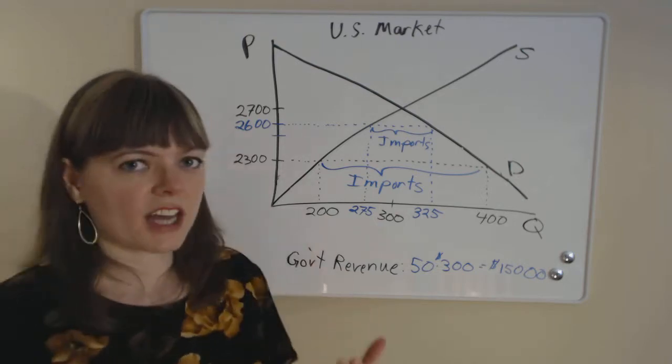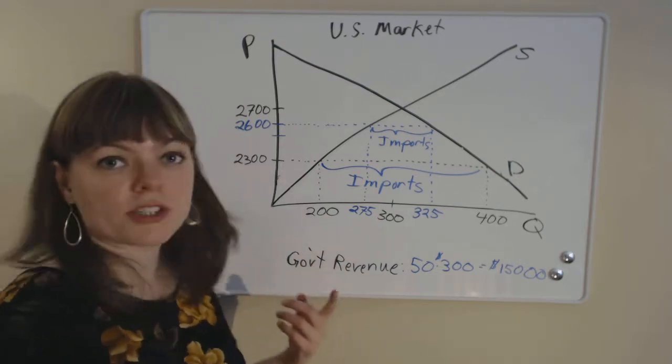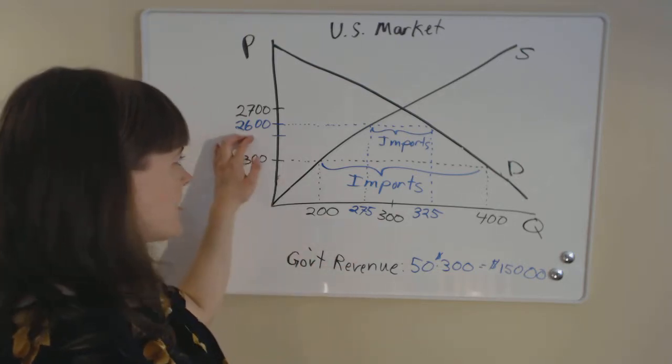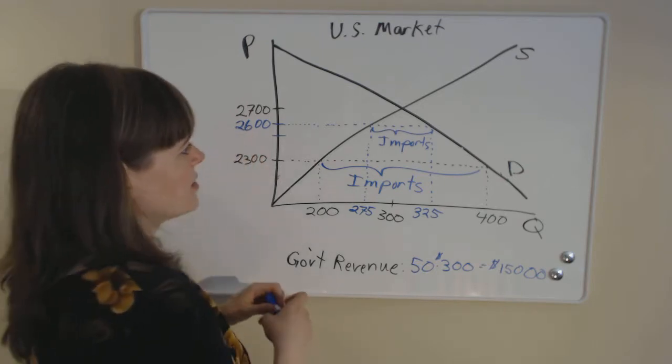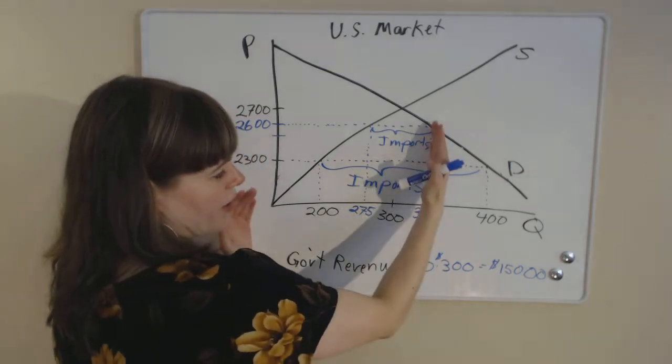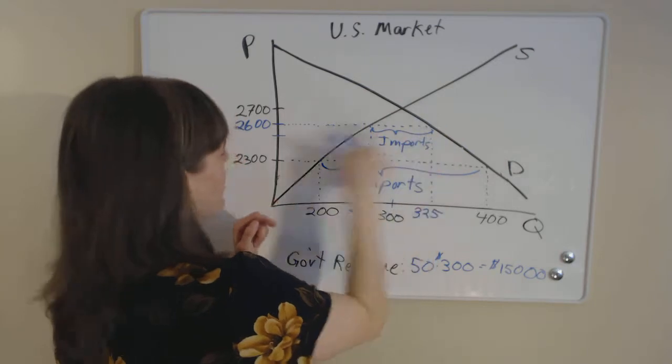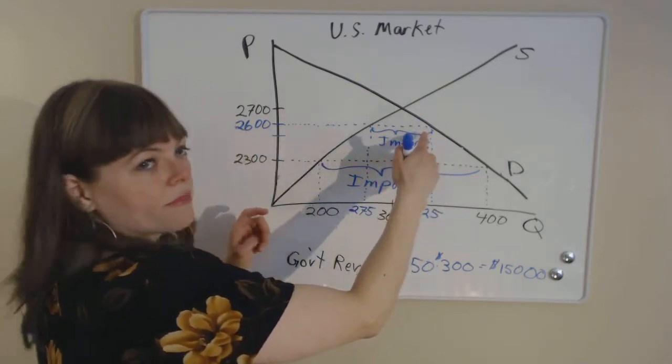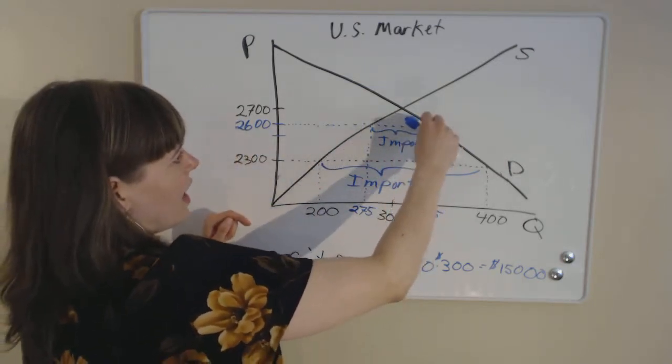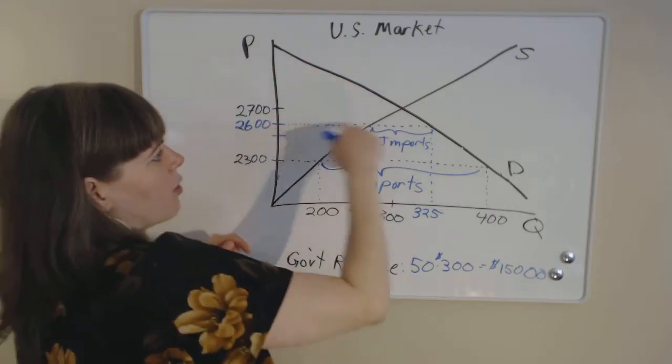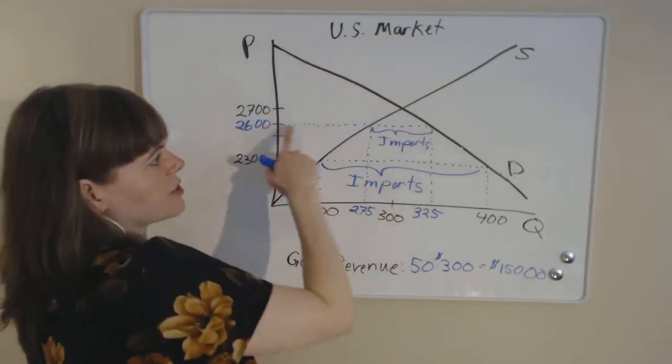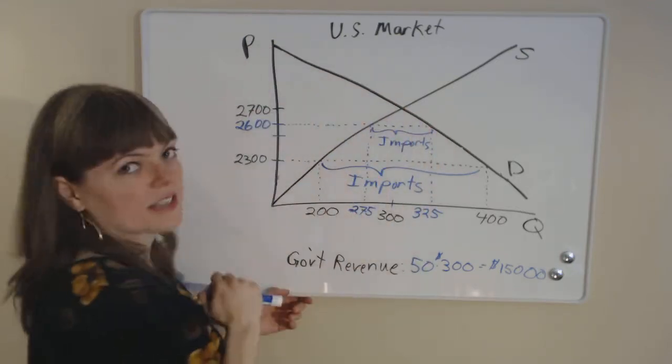So we have this big triangle here of consumer surplus in a free trade situation. And we can use the same logic to find our consumer surplus in the tariff situation. So in the tariff situation, we have 325 consumers who are willing to buy at this higher price. And we can add each of those consumers' values. So our new consumer surplus is going to be this triangle here using the same logic.